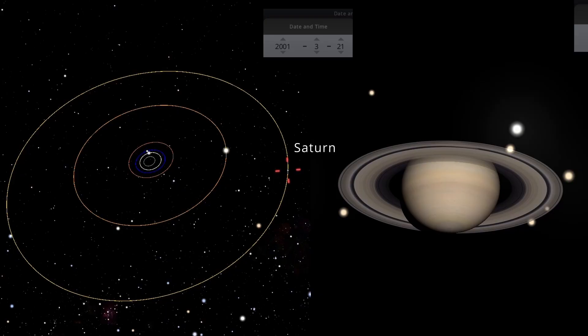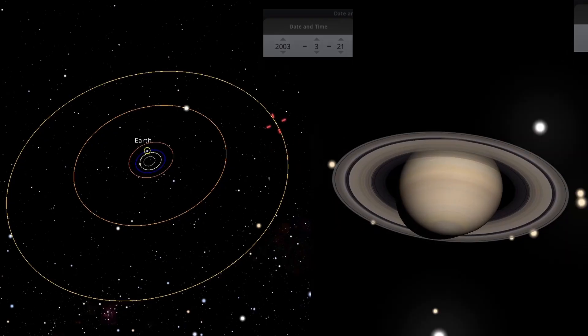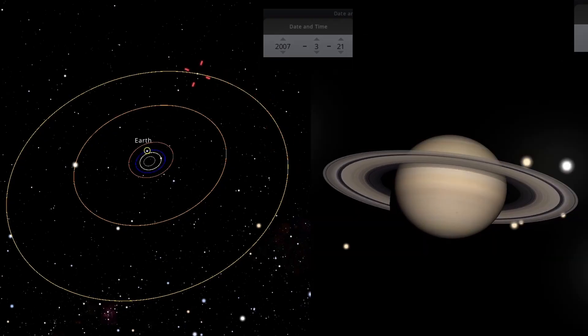Here is a food for thought. Can you find out how many oppositions will be there with respect to Earth in one revolution of Saturn? Give it a try.